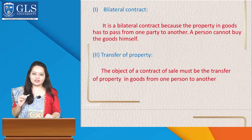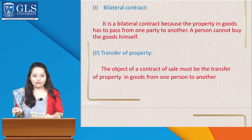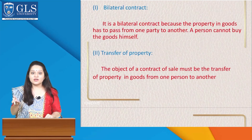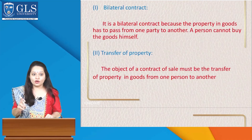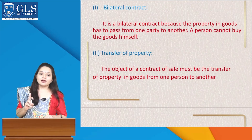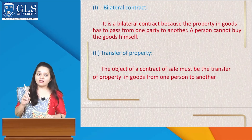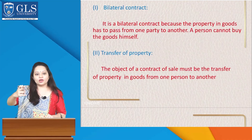The second essential is transfer of property. Obviously in a sale, goods must be transferred from one person to another. But what is very important to focus on is that the transfer should include ownership and not simply possession. Under a contract of sale, one person is transferring along with property the ownership of that property to the buyer, and not simply possession.